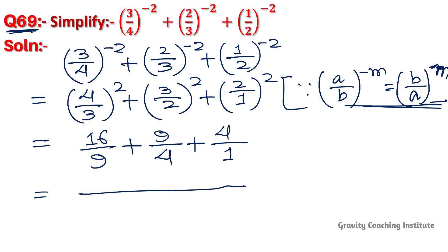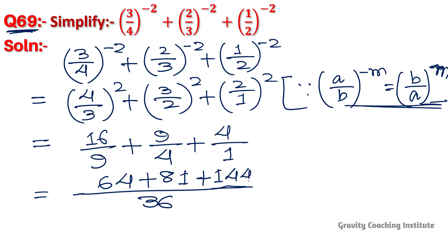We then take the LCM, which is 36. Dividing and multiplying accordingly: 16 upon 9 gives 64, 9 upon 4 gives 81, and 4 upon 1 gives 144. Adding these up over the common denominator of 36, the final answer is 289 upon 36.